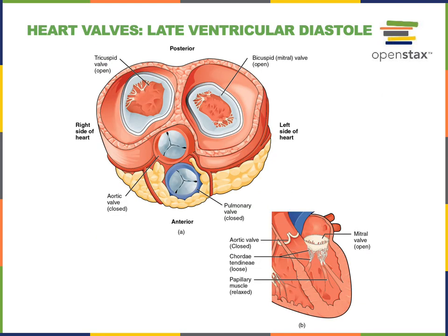Changes in blood pressure are what stimulate the opening and closing of the heart valves. During late ventricular diastole, the blood pressure inside the atria is higher than the blood pressure inside the ventricles, so the AV valves open, allowing blood to flow from the atria down into the ventricles, beginning the ventricular filling phase of the cardiac cycle. As the pressure inside the ventricles is lower than the pressure inside the arteries, the semilunar valves remain closed.